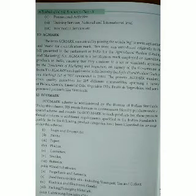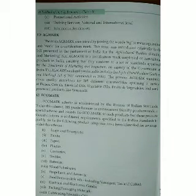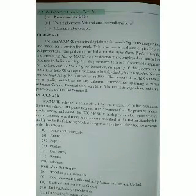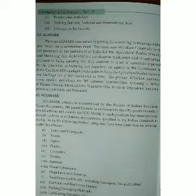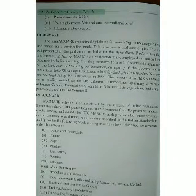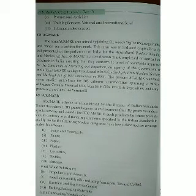AGMARK standards currently cover quality guidelines for 205 different commodities. AGMARK is put on pulses, cereals — not breakfast cereals from television but the cereals you eat — essential oils, vegetable oils, fruits and vegetables, and semi-processed products.